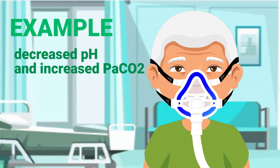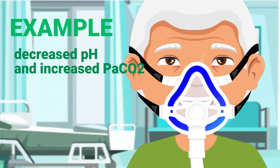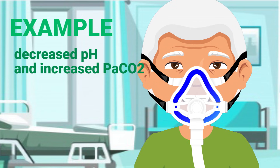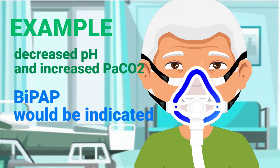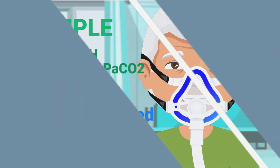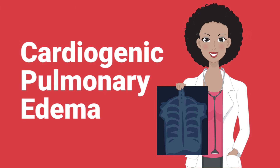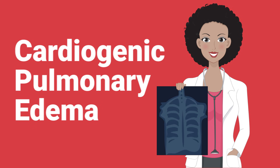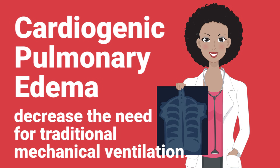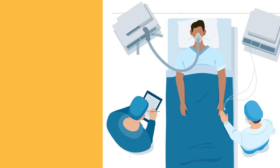For a simple example, if a patient has a decreased pH and an increased PaCO2, you can recognize that ventilatory issues are present and BiPAP would be indicated. Cardiogenic pulmonary edema is another common indication for BiPAP, and it has been shown to decrease the need for traditional mechanical ventilation in these patients.